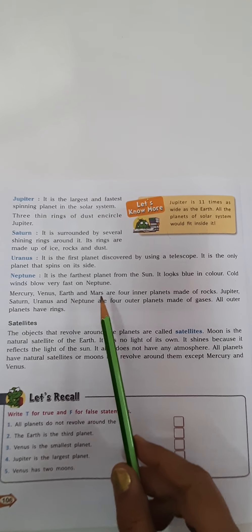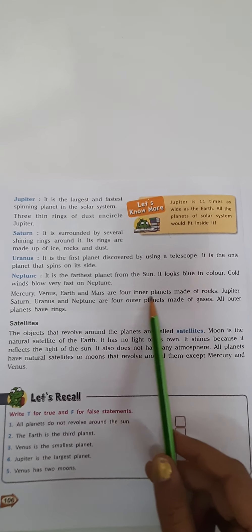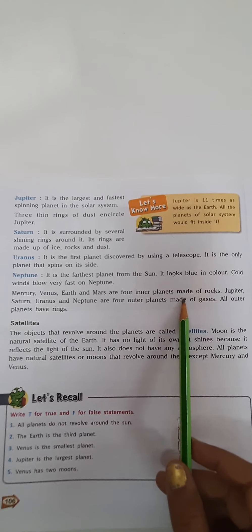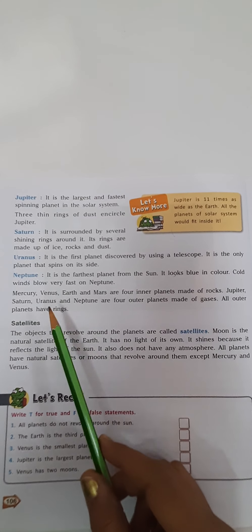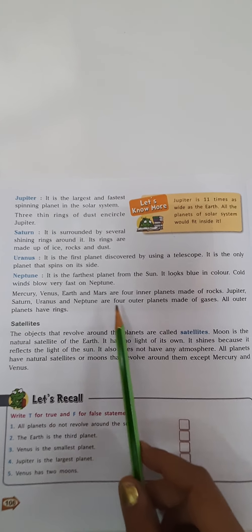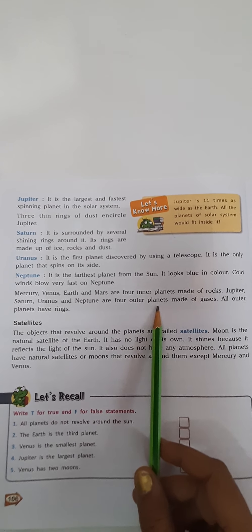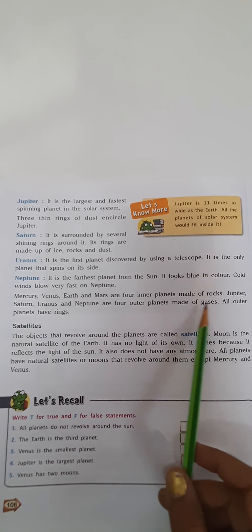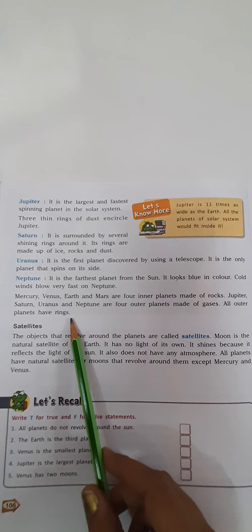Mercury, Venus, Earth, Mars are the four inner planets made of rocks. Jupiter, Saturn, Uranus, and Neptune are the four outer planets made of gases. All outer planets have rings.